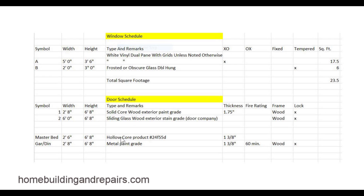You might have a product number, a specific product manufacturer's item number. You might call out for what type of window — metal, wood, solid core, hollow core. Glass might call out for frosted or obscure glass. A lot of times bathrooms are going to have obscure glass in them — they don't want people looking in from the outside while somebody is in there. So that's common.